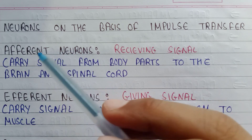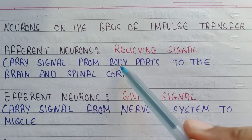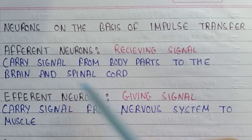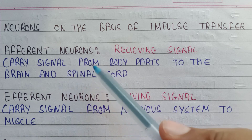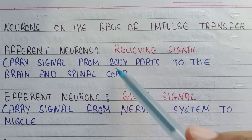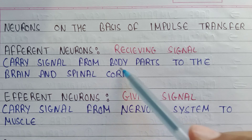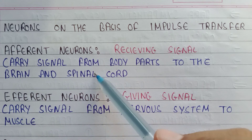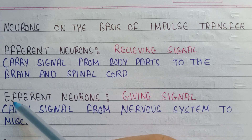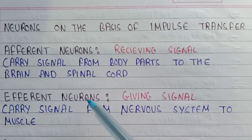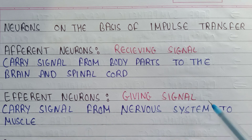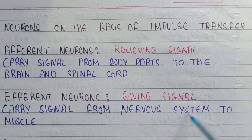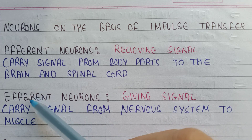Afferent neurons carry signals from body parts to the brain and spinal cord. Efferent neurons, on the other hand, carry signals from the nervous system to the muscles or the effector organs.